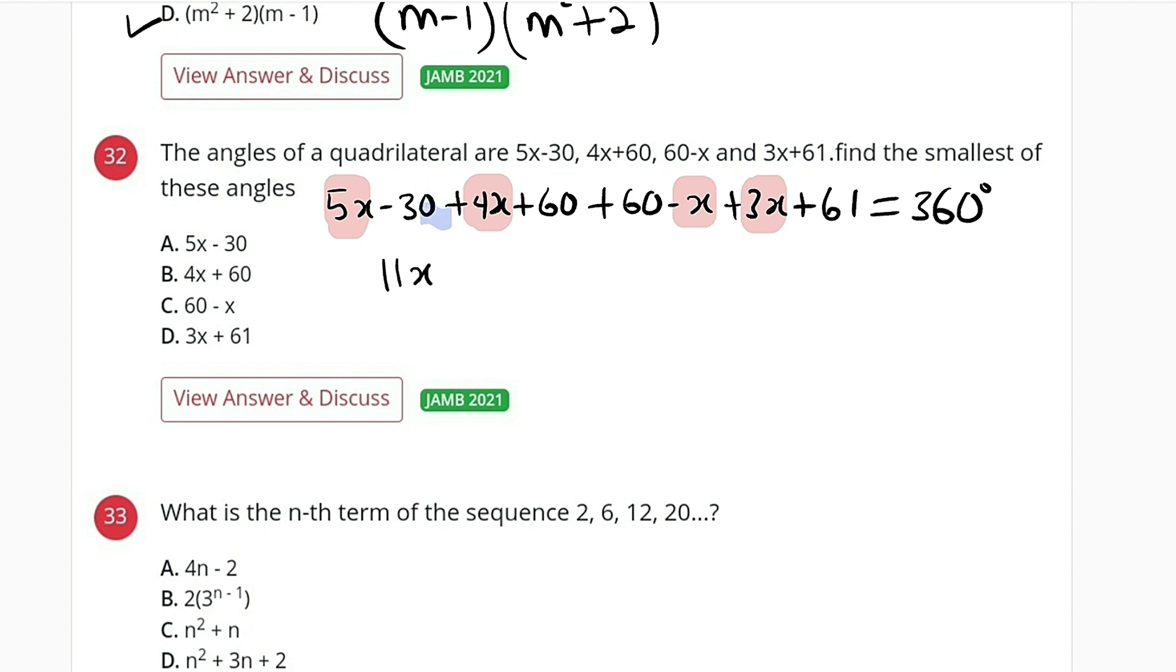Negative 30 plus 60 gives us 30, 30 plus 60 is 90.